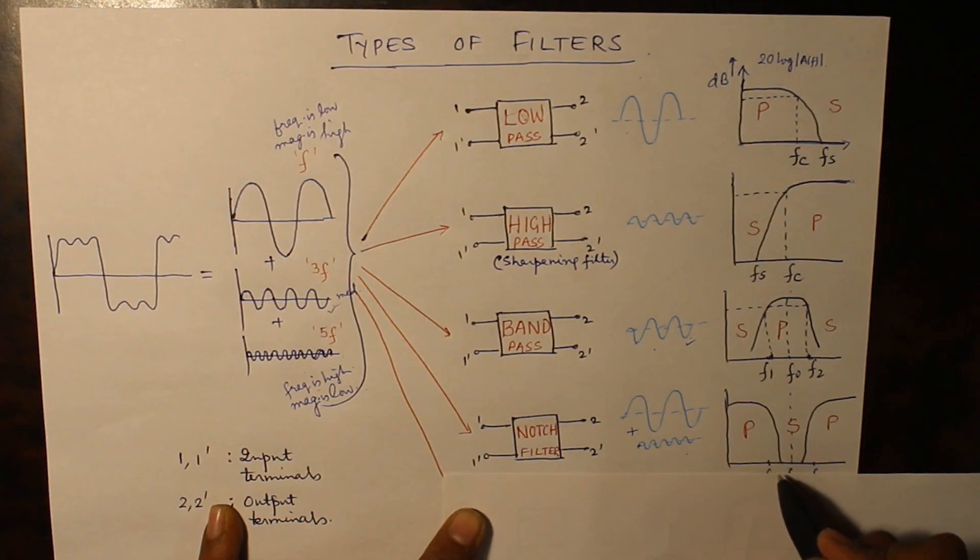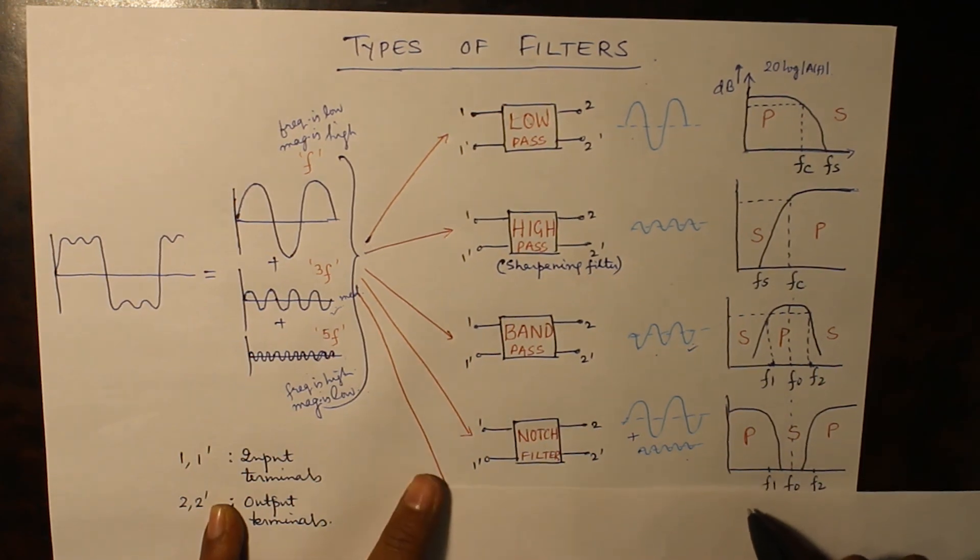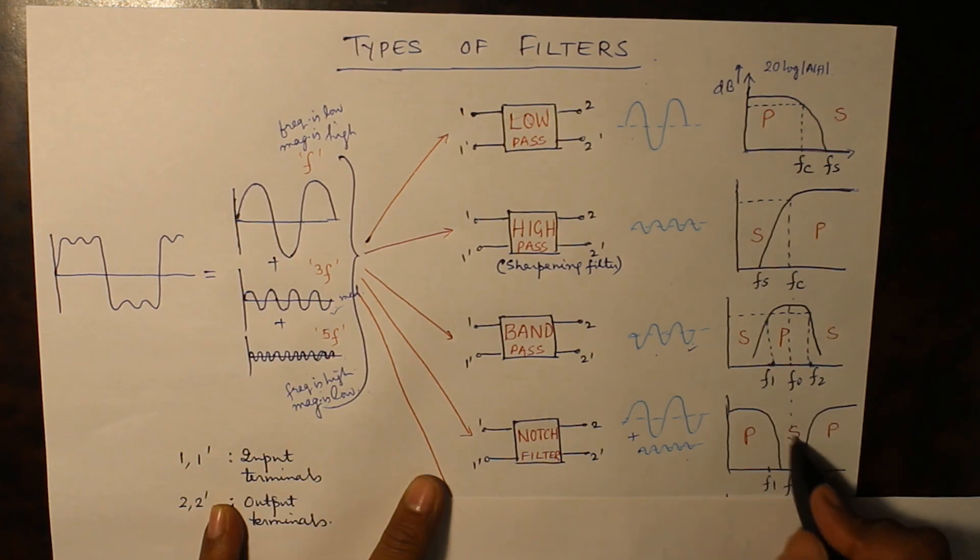Here there is a pass band corresponding to the lower frequency f1, and here f2 frequency again there is a pass band, and in between you have the stop band where this frequency f0 is completely being rejected.